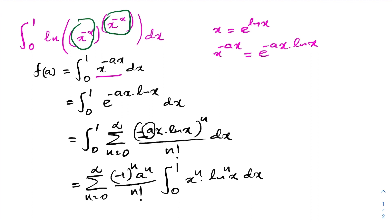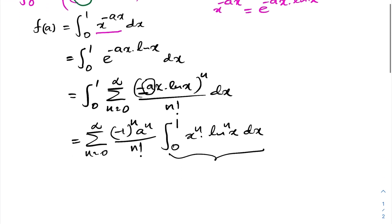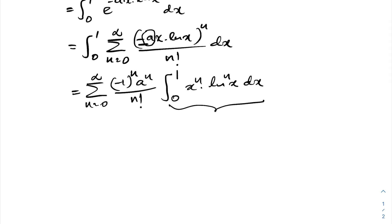Now we have to evaluate another interesting integral here. As I remember, I evaluated the integral of x times natural log of x raised to the 2020 power in a short video. So here, how to evaluate this integral: we can take a u-substitution u equal to minus natural log of x. Then we can isolate x, so x equals e to the minus u. Differentiating, dx equals minus e to the minus u du.